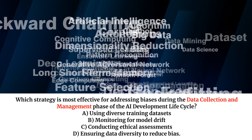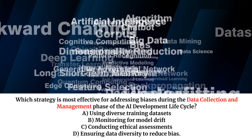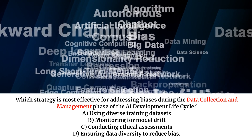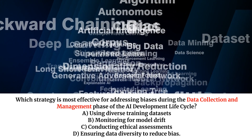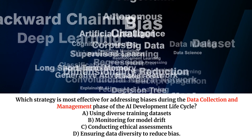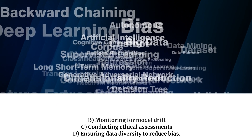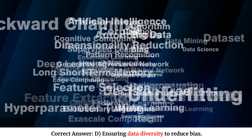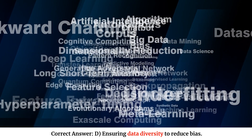Which strategy is most effective for addressing biases during the data collection and management phase of the AI development lifecycle? A. Using diverse training datasets. B. Monitoring for model drift. C. Conducting ethical assessments. D. Ensuring data diversity to reduce bias. Correct answer: D. Ensuring data diversity to reduce bias.